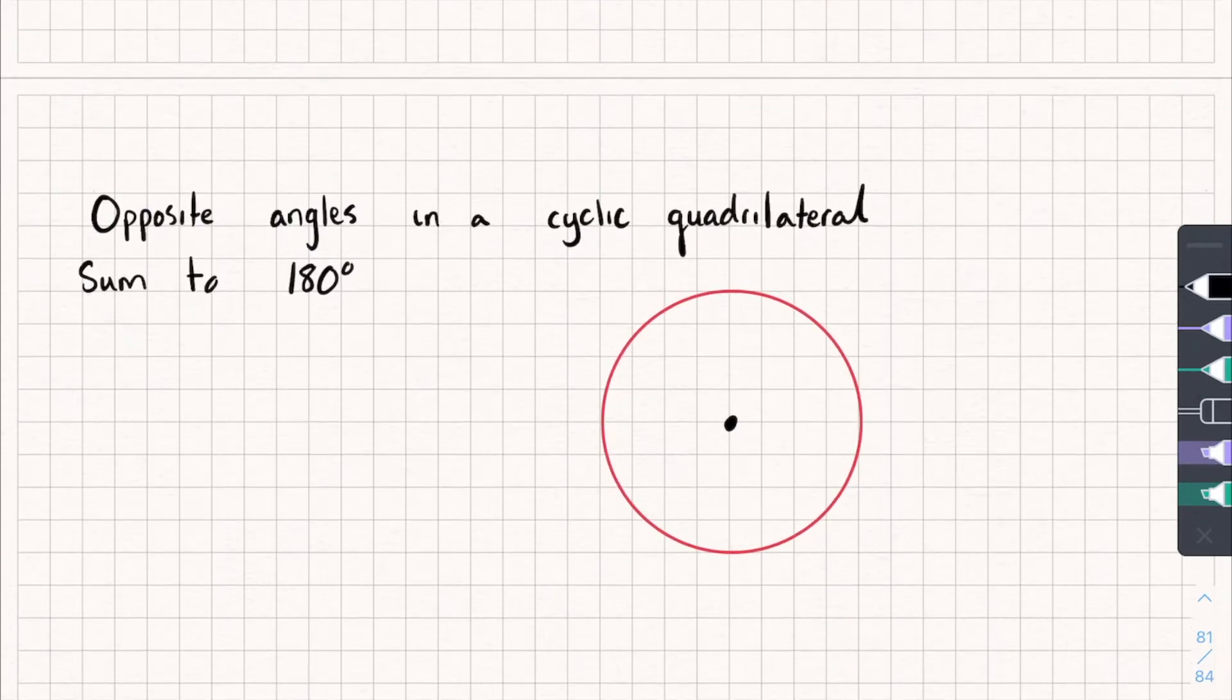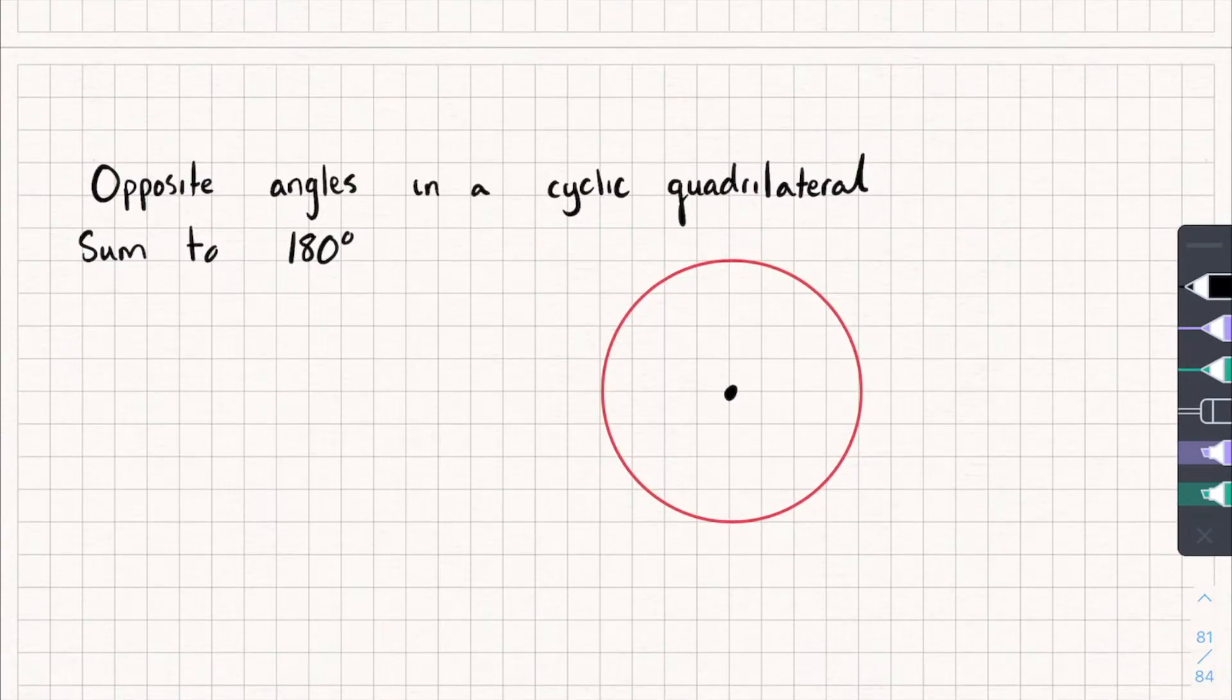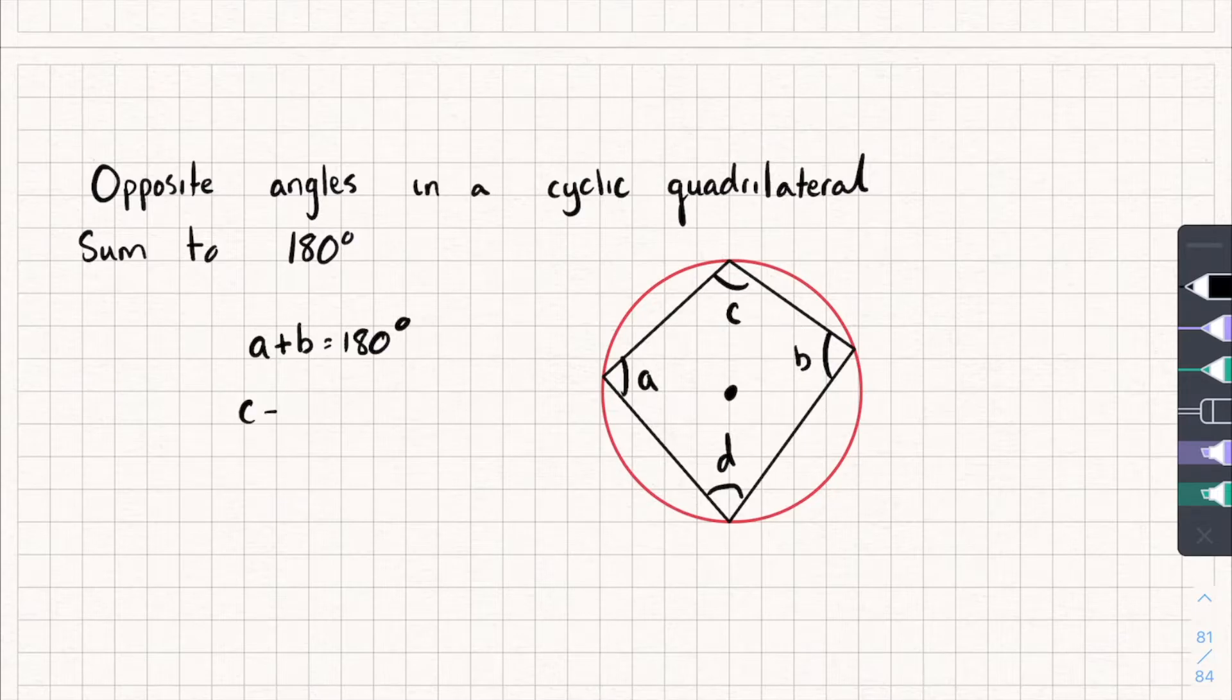The next one says that opposite angles in a cyclic quadrilateral sum to 180 degrees. So what is a cyclic quadrilateral? That is literally just any four-sided shape inscribed inside a circle. So let me see if I can draw one. So one, two, three, four. That's four sides, so that's a cyclic quadrilateral. And let's label the angles: A, B, C, and D. So angle A plus B will equal 180 degrees, and angle C plus D will equal 180 degrees.